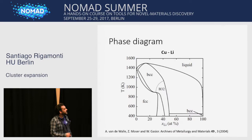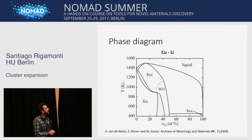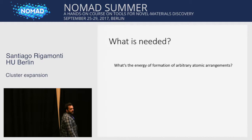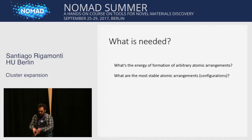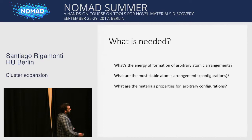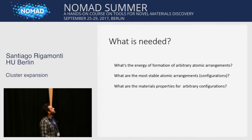This is an example of a phase diagram obtained with a cluster expansion method for a copper-lithium binary alloy. As you can see, one can obtain quite a complex description of the material. But in order to construct this phase diagram, we need first to know what is the energy of formation of any arbitrary configuration of the crystal. We would also like to know what are the most stable ones at zero temperature. We may also wonder about the different properties for different concentrations and different temperatures.